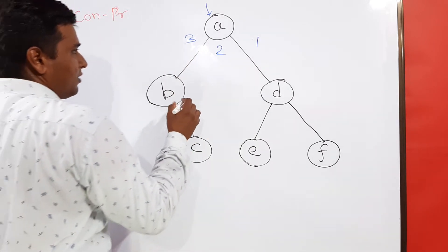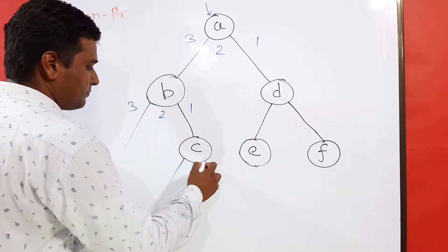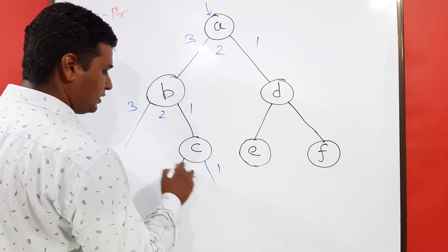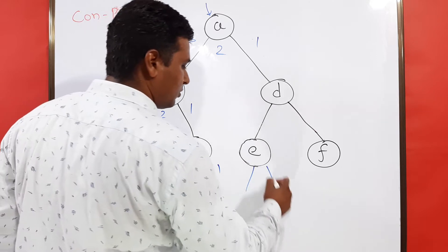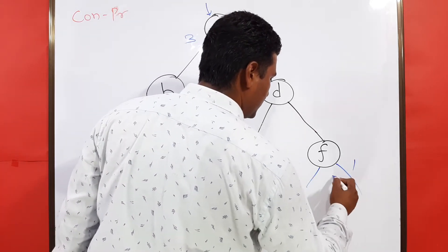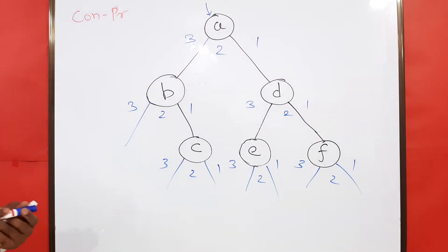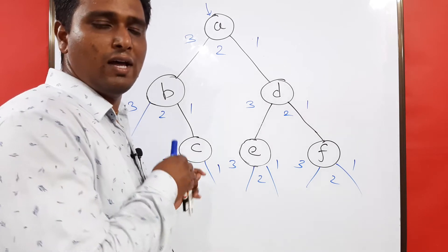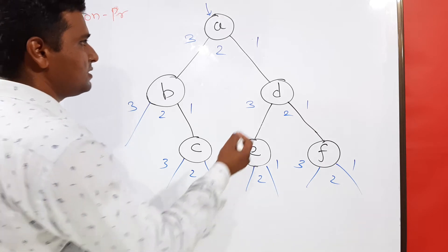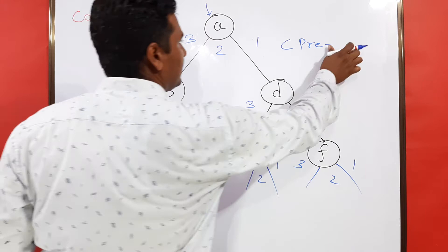We are going to write one, two, three again. I am having a leaf node and no other branches, so I write one, two, three. In each case I am dividing into one, two, three — it's pretty easy. Now you have divided each node into three parts and it is very easy to find out what is converse pre-order.